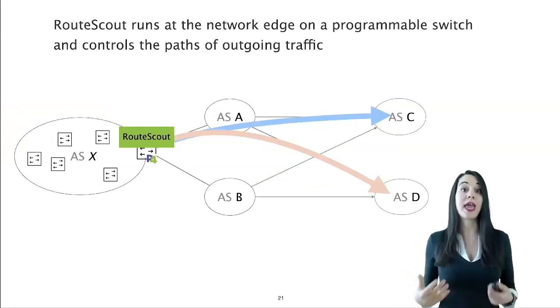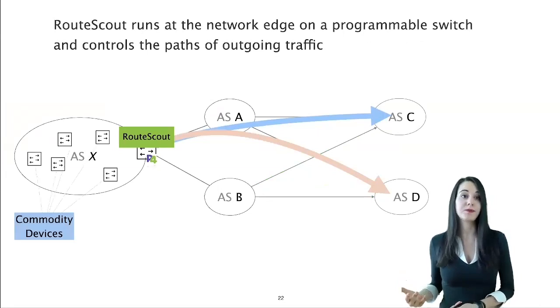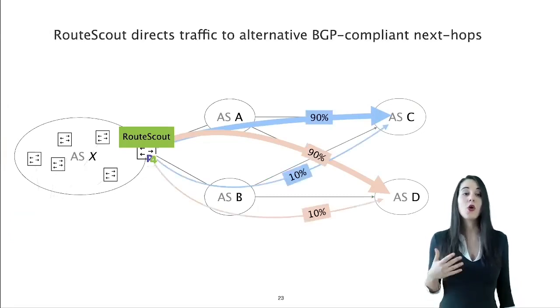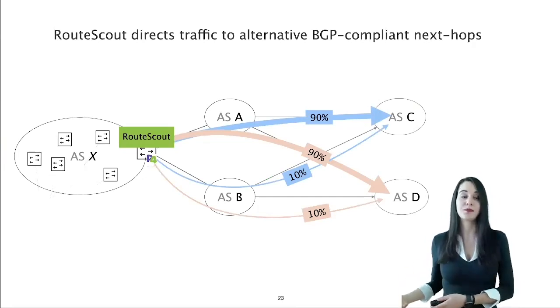Now let's see how RouteScout will explore and exploit this opportunity. RouteScout runs at the edge of the network on a programmable switch. Observe that the other devices in ASX can be commodity switches; they do not need to be programmable. Also, there is no need for coordination across edge devices of the same AS or across ASs. These design decisions make RouteScout easier to deploy in practice. RouteScout uses some traffic of its destination to test alternative BGP-compliant next hops, which it automatically learns from BGP. For instance, here, RouteScout directs 10% of the traffic to its destination via ASB.